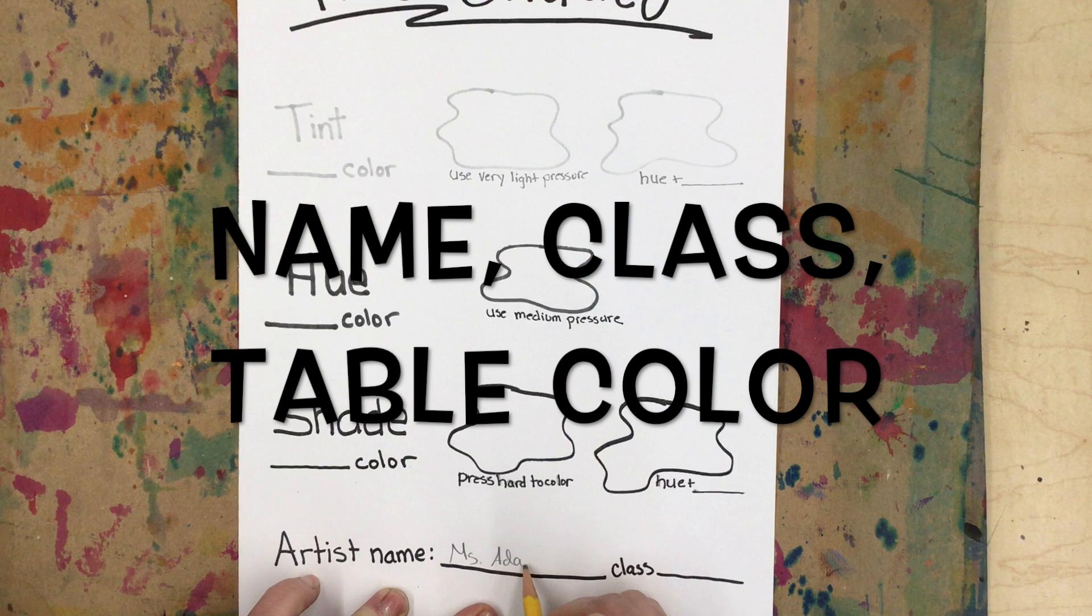At the bottom, write your name, your class code, and circle your table color.